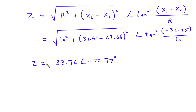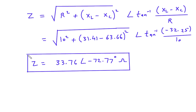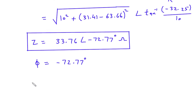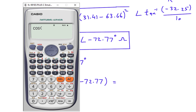Since it is impedance, its unit will be Ohm. After finding the impedance and phase angle phi — phi equals minus 72.77 degrees — we can find the value of cos phi also. Cos phi is the power factor and it equals cos(minus 72.77), which is 0.296.